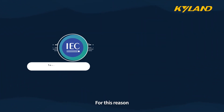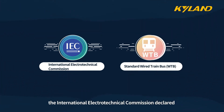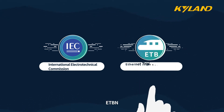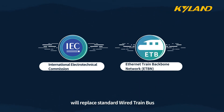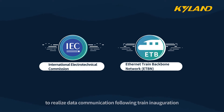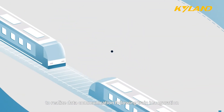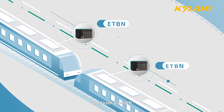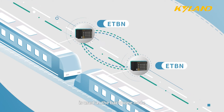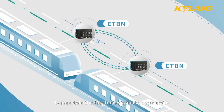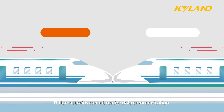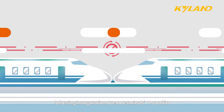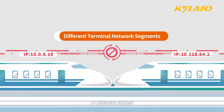For this reason, the International Electro-Technical Commission declared that the new Ethernet Train Backbone Network will replace the standard wire train bus to realize data communication following train inauguration. Importantly, the Layer 3 switch is used as the backbone node to undertake data transmission between trains. Different trains cannot realize data communication following inauguration due to terminal IP conflicts or different subnets.